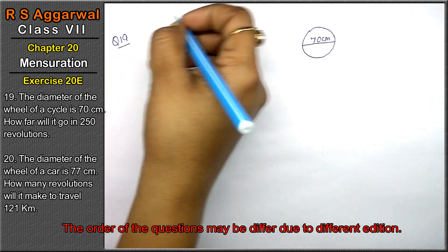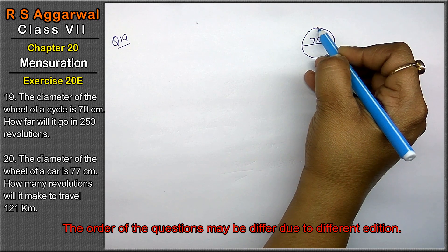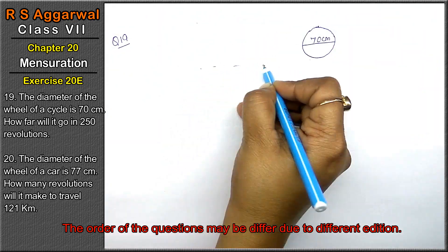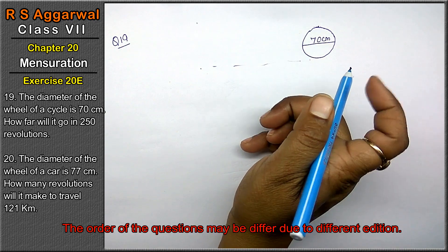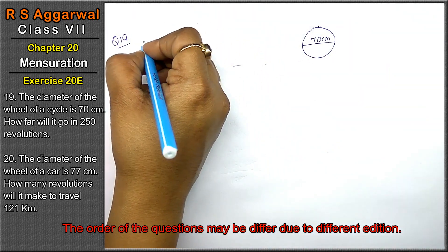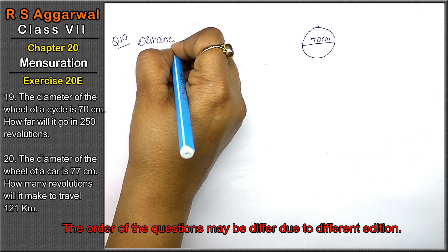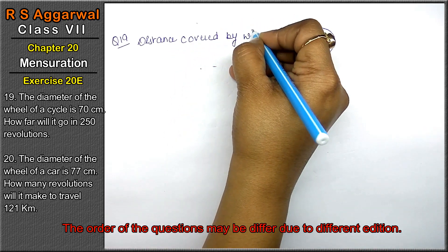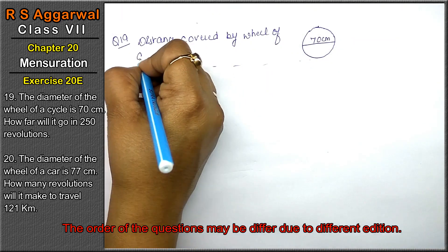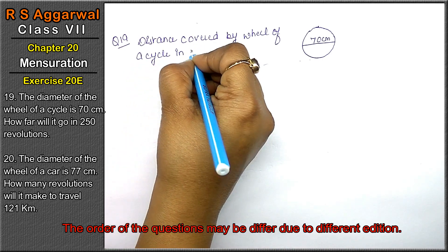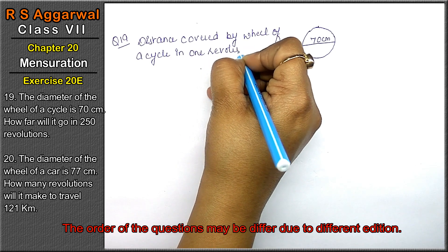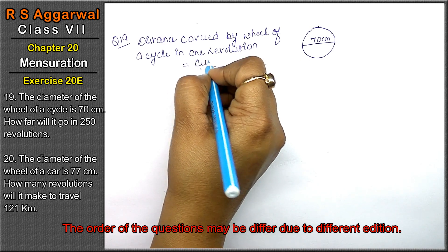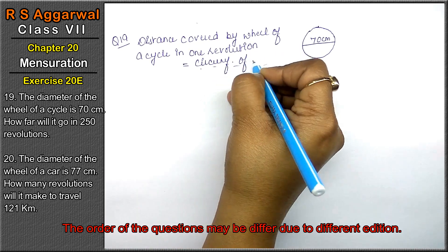Friends, first we have one revolution — this cycle goes from start back to start again. The distance it covers from here to here in one revolution. We have 250 revolutions. So first we will write: distance covered by the wheel of a cycle in one revolution, that is equivalent to the circumference of a circle.